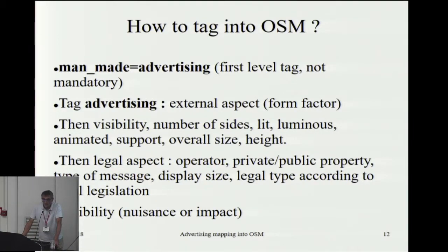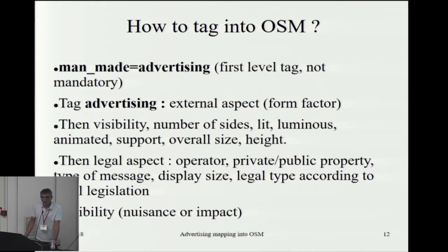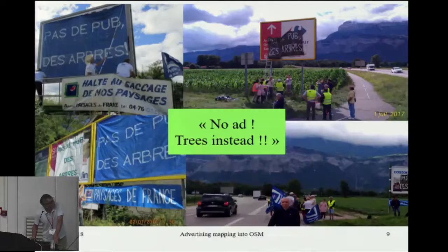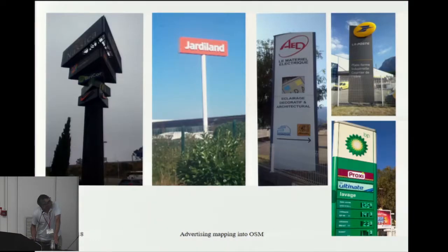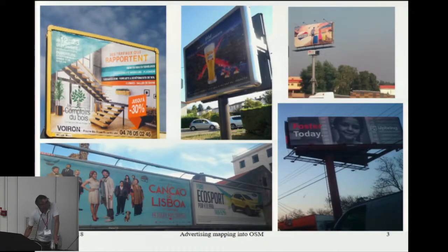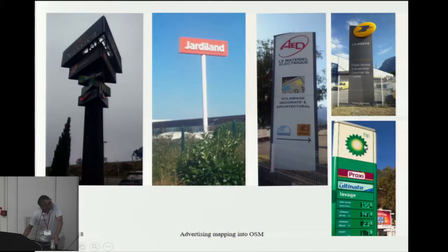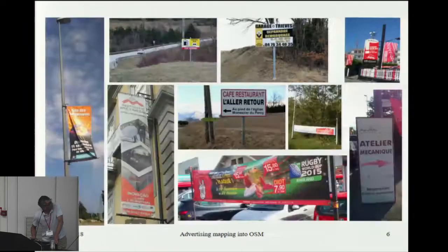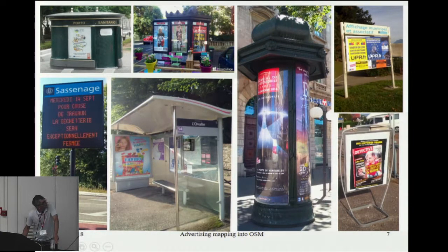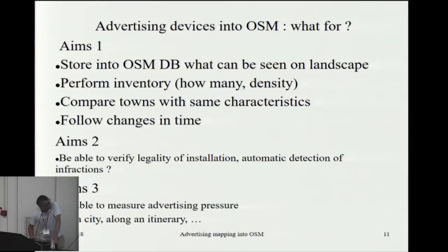So how to tag that in OSM. If you don't know anything, you can just put one tag: amenity=advertising. But it's better to use the advertising tag and give a value — the value gives the form factor or the external aspect of the device. Coming back to the first slide: you would say advertising=billboard, advertising=tarp, advertising=poster_box, advertising=totem, advertising=columns, advertising=board.